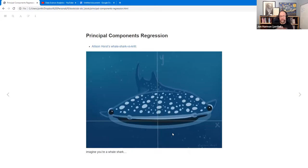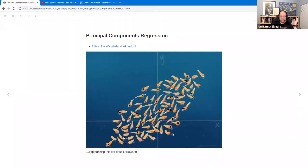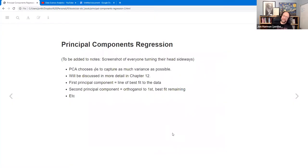Whenever I'm talking about principal components, I like to bring up this image that Alison Horst created that really helps to kind of wrap your head around what principal component analysis is. So imagine you're this whale shark and you're trying to swim through this delicious krill swarm. And the idea is that you want to get as much of the krill as you can. So the idea is, you know, you just turn your head and so you change the axes to capture as much variance as possible.